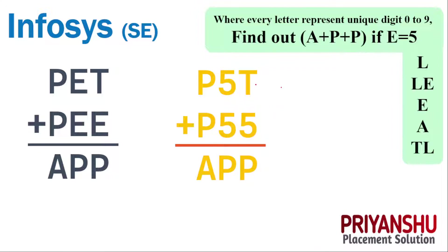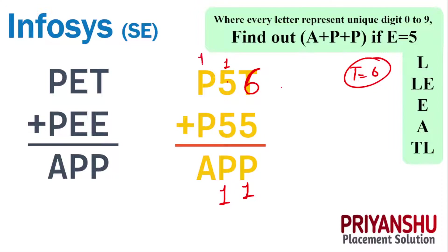Let's try another value — for example, can I put T equal to 6? Let's try T equals 6. So the value of T is 6. Now 6 plus 5 is 11, and 1 is carry. Then 5 plus 5 plus 1 is 11, and 1 is carry. From here P value is 1, so P equals 1. And the value of A we get is 3. So the final answer we got is A=3, P=1.